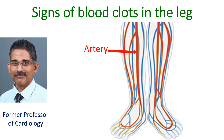Arteries have a bright red colour because of the higher oxygen content of the blood in them. They have thick muscular walls, as blood travels at higher pressure in them. The heart pumps the blood into them with each heartbeat.